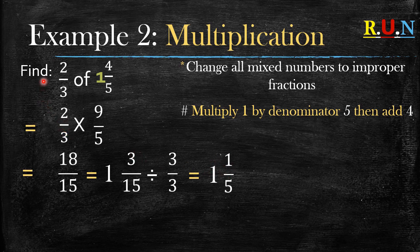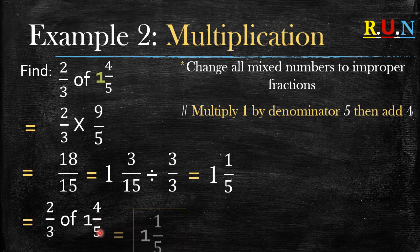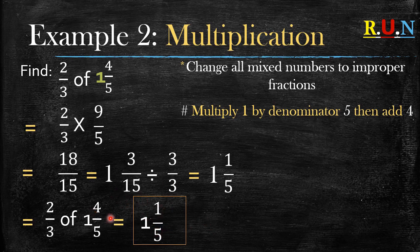But since the question asked you find two over three of one whole four over five, you don't just write the final answer like this. What you do is you say two over three of one whole four over five is equal to one whole one over five. That's how you write your answer.